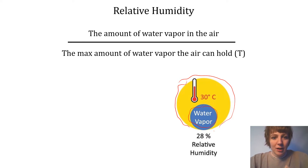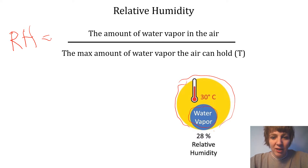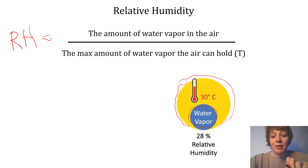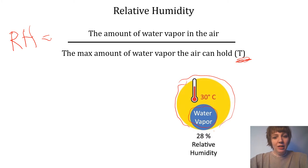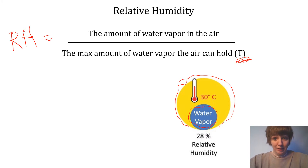The equation for relative humidity is: relative humidity equals the amount of water vapor in the air divided by the maximum amount of water vapor that the air can hold. The value on the bottom is actually dependent on temperature. It turns out that warm air can hold more water vapor than cold air.